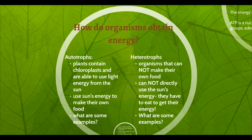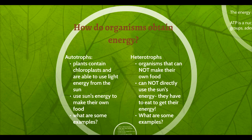Autotrophs — "auto" means self. So autotrophs are organisms that absorb the sun's energy and convert it into chemical energy for that organism. Plants have chloroplasts which allow them to absorb sunlight and eventually make sugar from that. Examples of autotrophs would be any kind of plant, anything that's green basically.